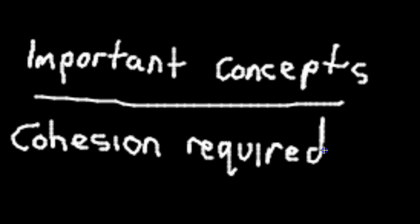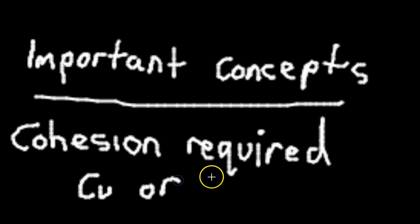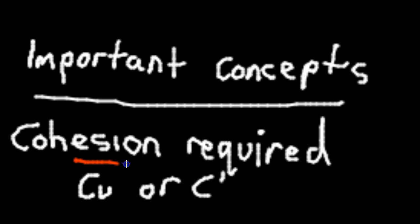A vertical cut can only be made in a soil when we have either an undrained cohesion or a drained cohesion for that soil. Otherwise it will not be possible — the soil will always fail when it reaches its internal friction angle.